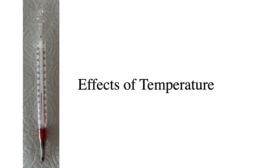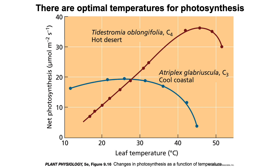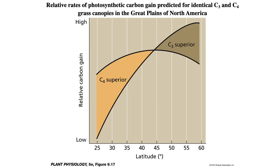Now let's discuss the effects of temperature on photosynthesis. Photosynthesis increases with temperature, reaches a maximum, and then declines with further increases in temperature. Examples here show a cool-climate C3 plant and a hot-climate C4 plant. The C3 plant is more efficient than the C4 plant at cooler temperatures, but the reverse is true at higher temperatures. This figure shows the relative rates of photosynthesis between a C3 and a C4 plant for grass canopies in the Great Plains of North America.